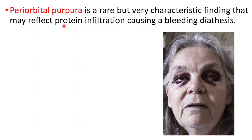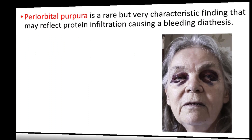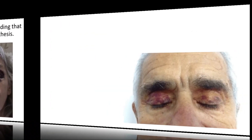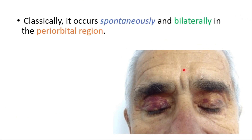Here you can see periorbital purpura. When it occurs, it occurs spontaneously and bilaterally — you can see it around both eyes.